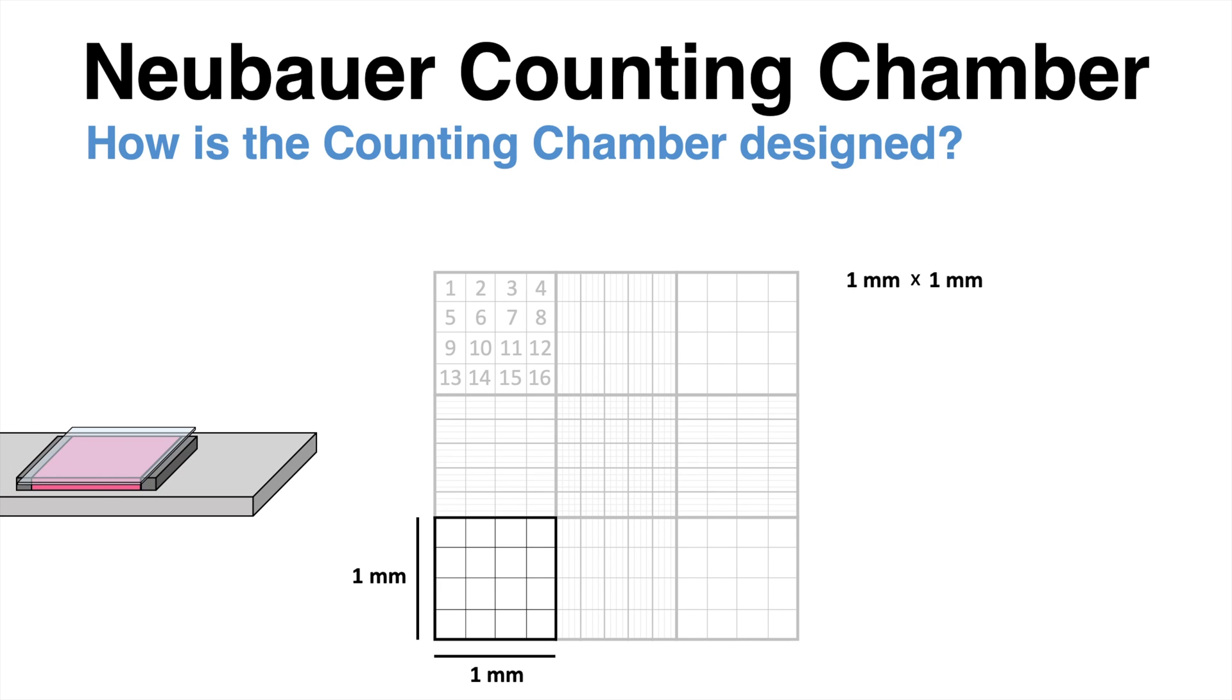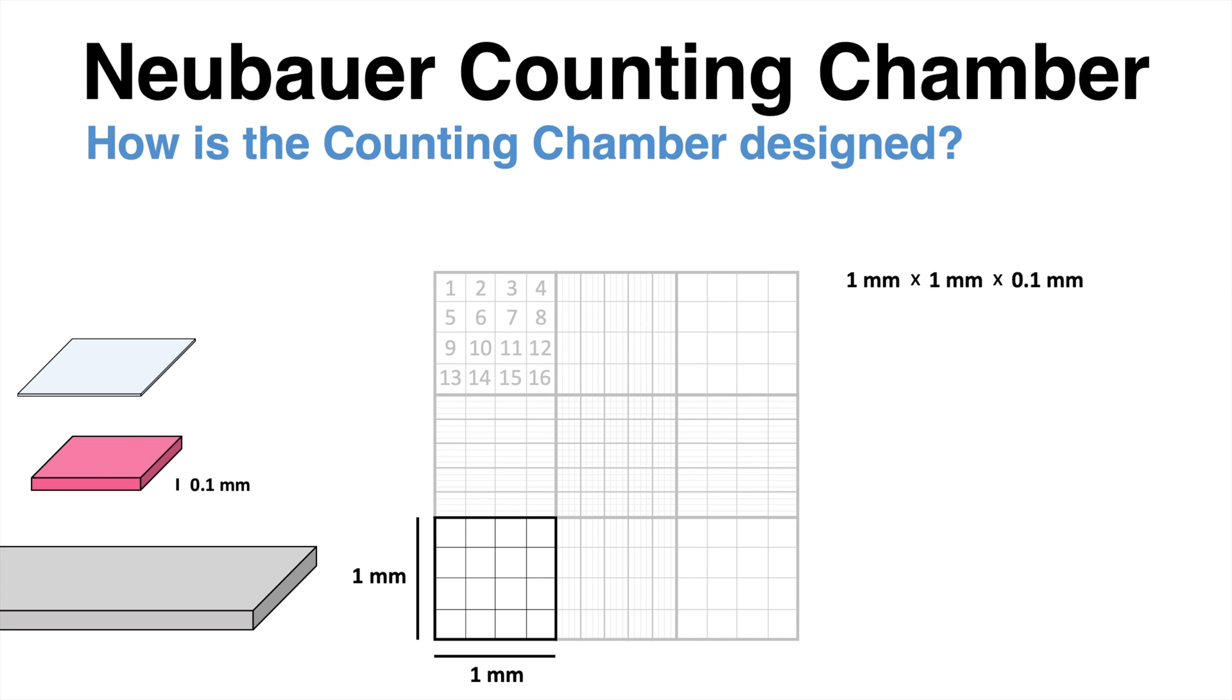Since the three-dimensional solution is applied onto the slide, the height is also an important parameter to calculate the volume of the sample. In a Neubauer counting chamber, the distance between slide and the coverslip is 0.1 mm. In total, one of those 9 squares contains a volume of 0.1 µL.